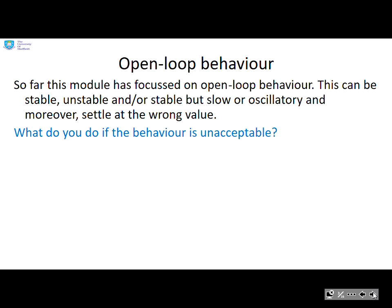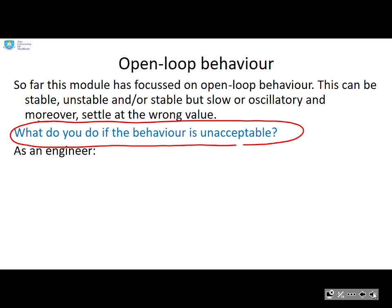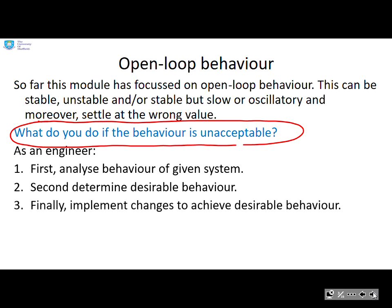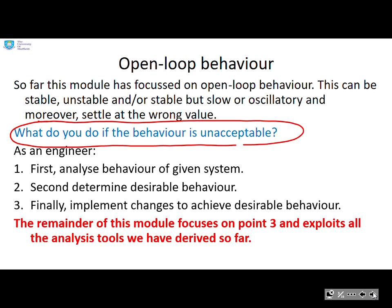Open loop behaviour: so far this module has focused on open loop behaviour. This can be stable, unstable, and it might be stable but slow or oscillatory, and moreover it might settle at the wrong value. As an engineer, first you're going to analyse the behaviour of a given system — we've done that with our first and second order dynamics. Then you ask yourself what constitutes desirable behaviour, and finally you implement some changes to achieve it. The remainder of this module focuses on that third point, exploiting all the analysis tools derived so far.